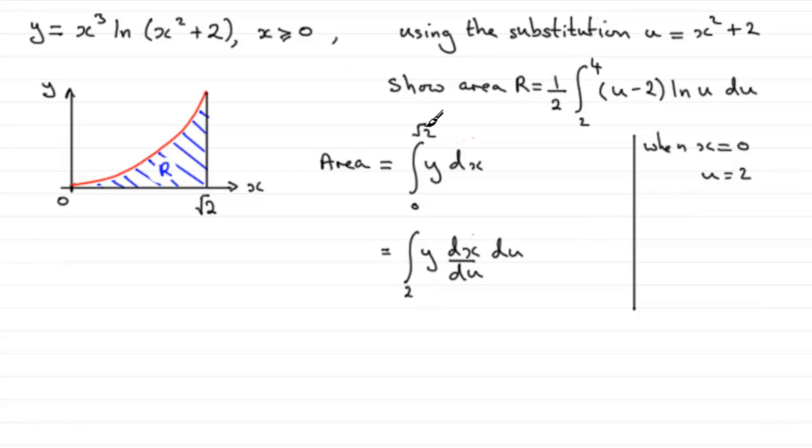And we take our upper limit, root 2. When X equals root 2, we can see that therefore u equals root 2 squared, which is 2, plus another 2, and that's going to be 4. So there's our upper limit.